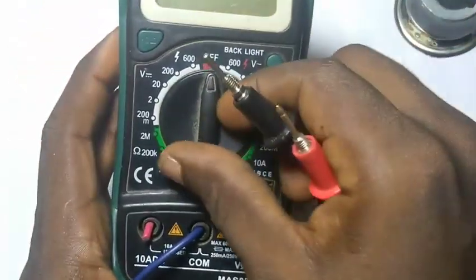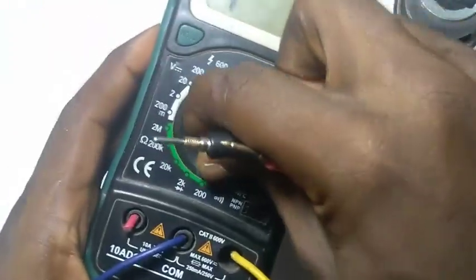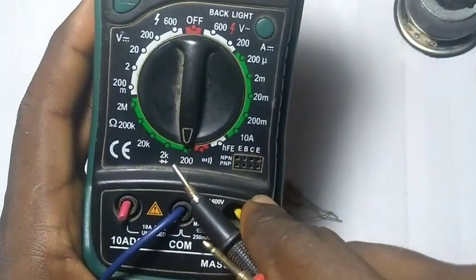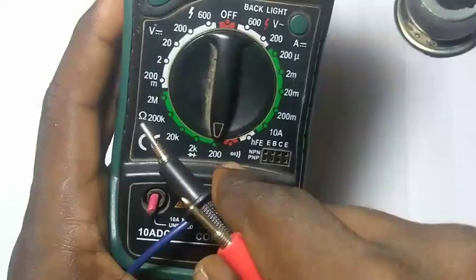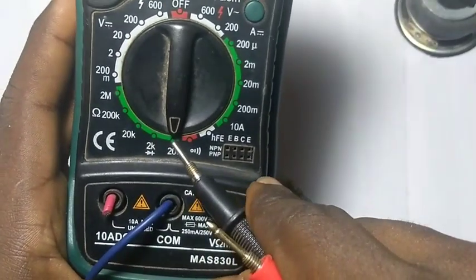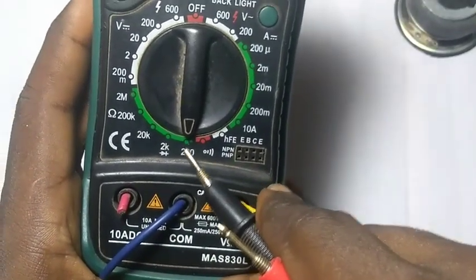So what I would advise you: switch your multimeter to this side. Now this green side you see, your own may not actually be green, but you see the sign here which is a resistance sign, ohms.